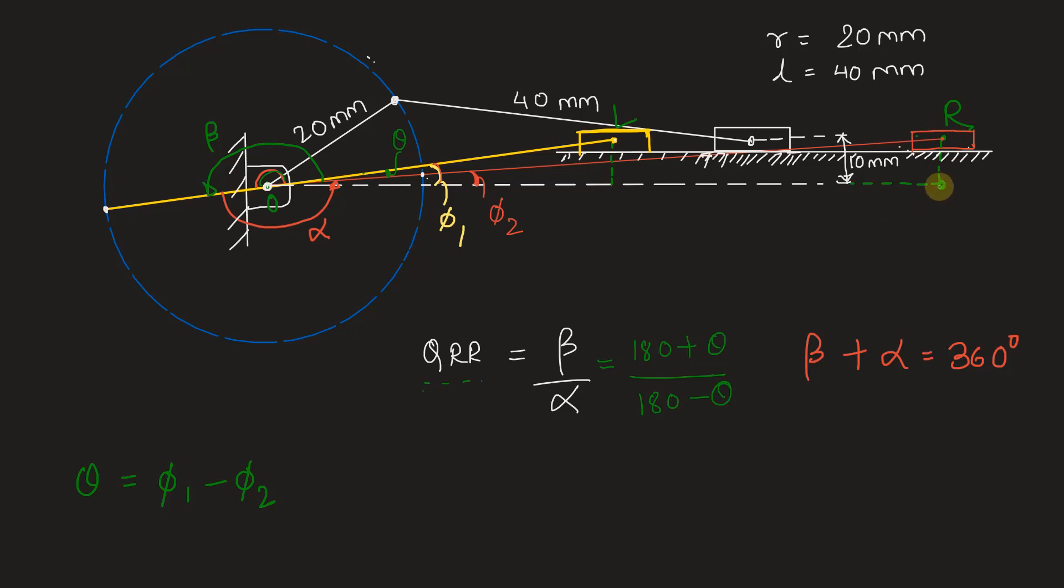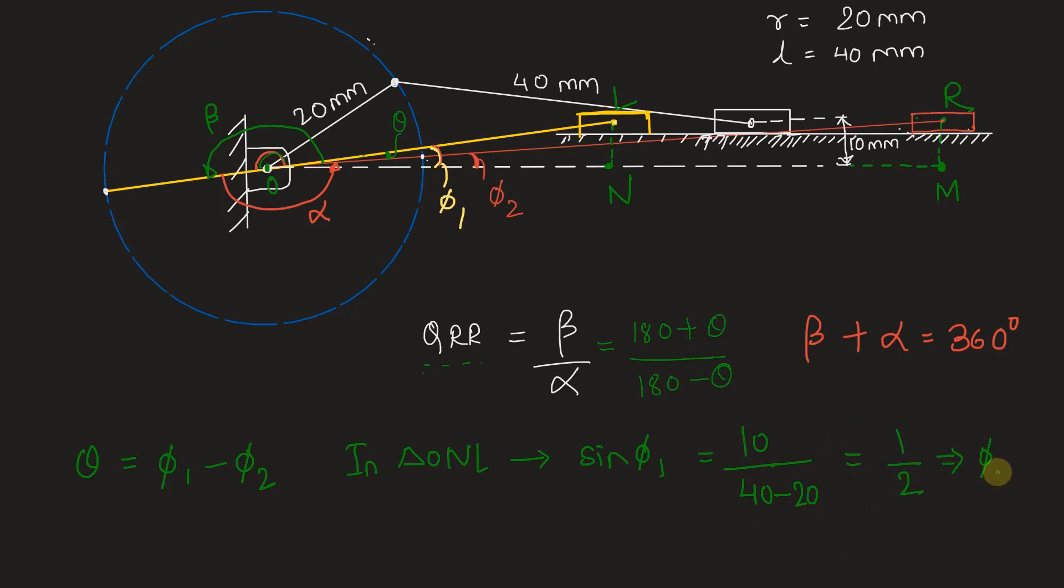So we have in triangle ONL, the smaller triangle, sin phi 1 is nothing but opposite side upon hypotenuse, which is nothing but 10 millimeters upon 40 minus 20 millimeters, which is equal to 1 by 2. This gives us phi 1 as 30 degrees because sin inverse 1 by 2 is 30.